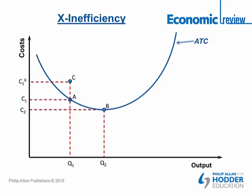We can do the same thing at point B for producing Q2. There would be that same X-inefficiency if competitive pressure wasn't there. Instead of the minimum cost C2 for producing Q2, we get a cost of C2X. The vertical distance between point B and point D represents that organisational slack.